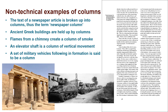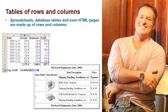Now let's look at some non-technical examples of columns. You've probably heard the term newspaper column, where text is lined up from top to bottom with maybe a couple of columns on the page. You've also seen Greek architecture with the Doric and Corinthian columns. There's a column of tanks, as I mentioned. An elevator shaft is a column of vertical movement. Flames from a chimney are said to be a column of smoke. Those are some non-technical concepts you can apply to columns and rows.